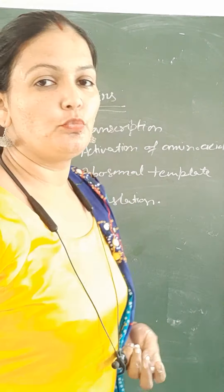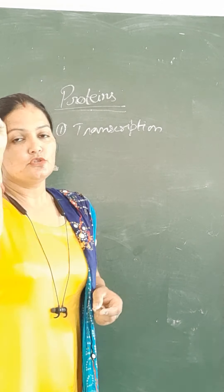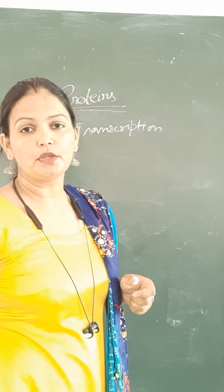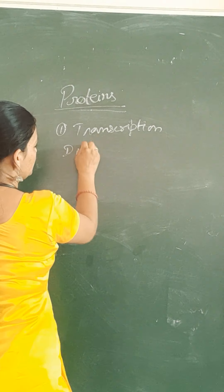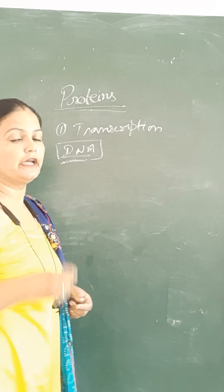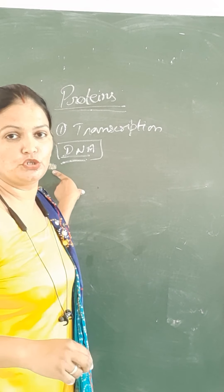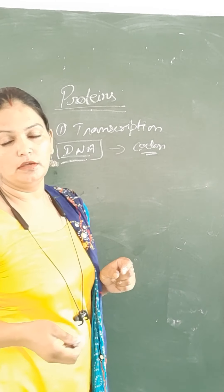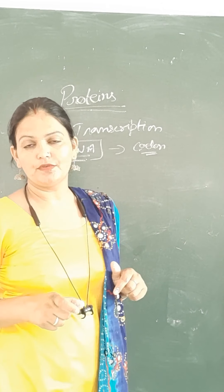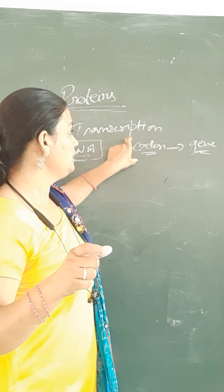Toh one by one hum yeh charon process karein. First hum lete hain transcription. Toh transcription mein kya hota hai ki jis protein synthesis ke liye jo bhi information hai, that is in the DNA. DNA ke andar information hoti hai ki kaunsa protein banna hai, kahaan par banna hai, kis purpose ke liye banna hai. DNA ke andar information hoti hai and this information in the DNA is in the form of codon — yeh nucleotide ki sequence, 3 nucleotide ki sequence jisko hum codon bolte hain. Gene is the unit that carries out the codon.